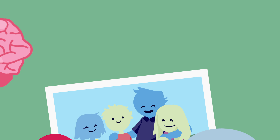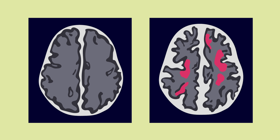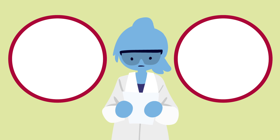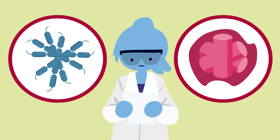In a brain suffering from Alzheimer's disease, a large number of neurons die, resulting in tissue loss that can be seen on a brain scan. Some researchers believe that two protein complexes contribute to this widespread neuron death: neurofibrillary tangles and amyloid plaques.